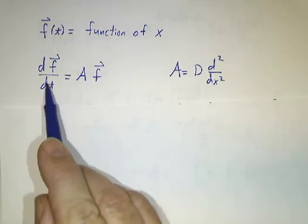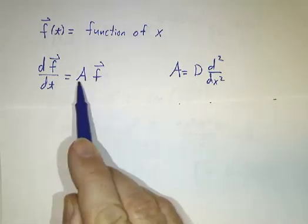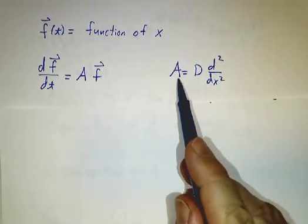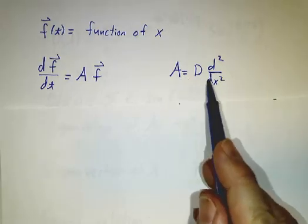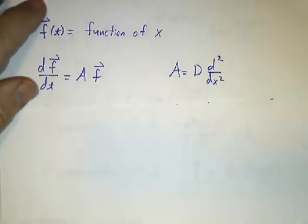This should remind you of dx/dt equals a matrix times x. And you solve that by finding the eigenvalues and eigenvectors of the matrix. Likewise, we want to find the eigenvalues and eigenvectors of the second derivative operator. And we already did that in an earlier video.